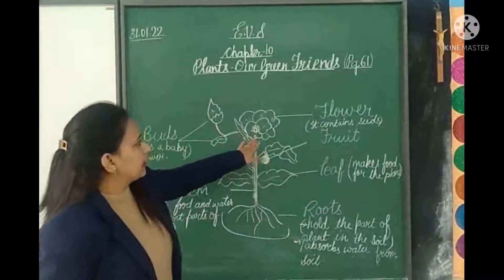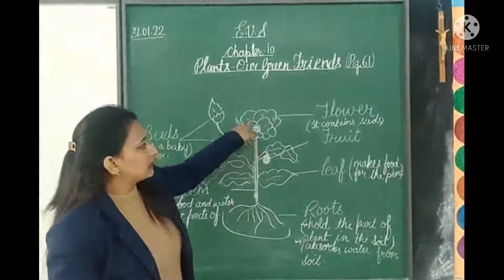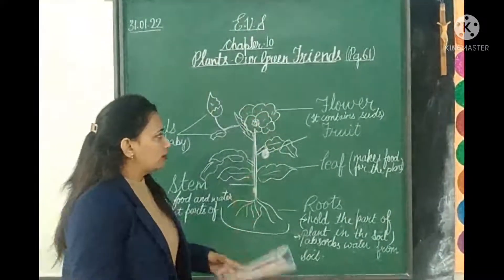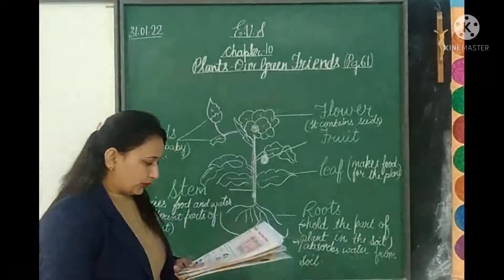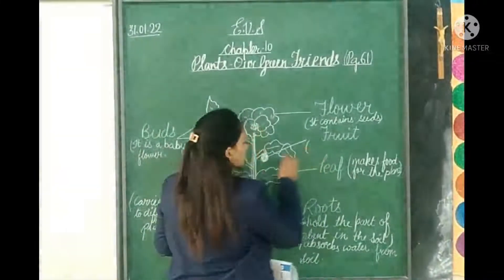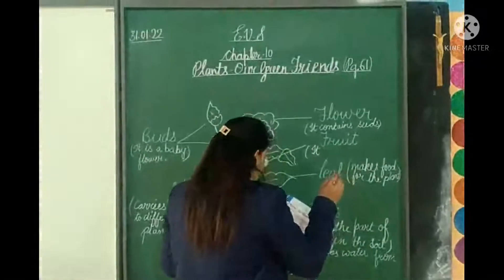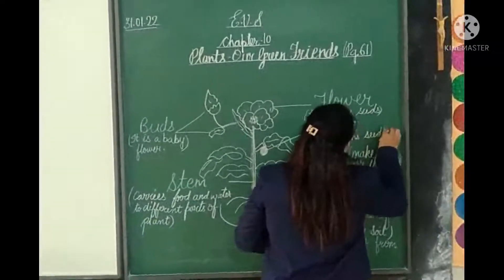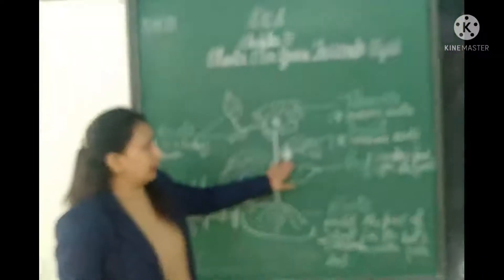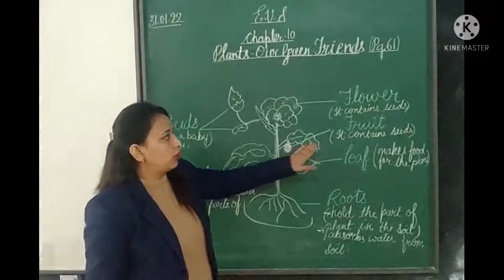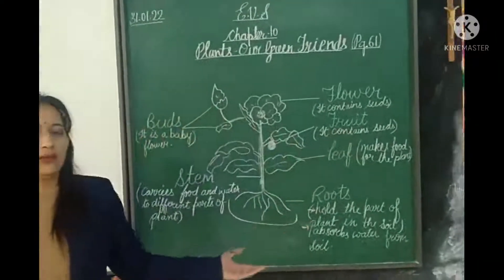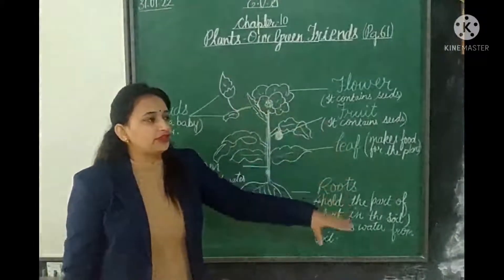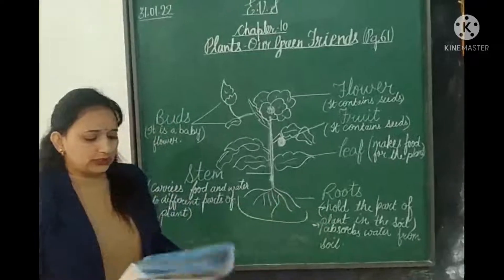The plant contains seeds, and these seeds help us to grow new plants. These seeds form a new one — that is called fruit. Fruit contains seeds. When these seeds grow with the help of wind, air, and water, they grow into new plants.